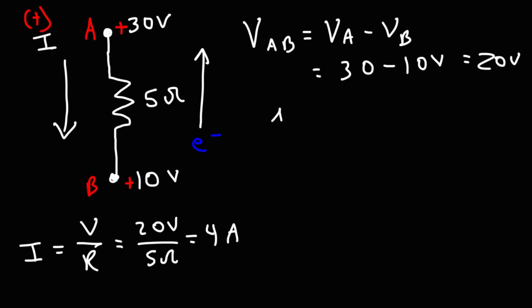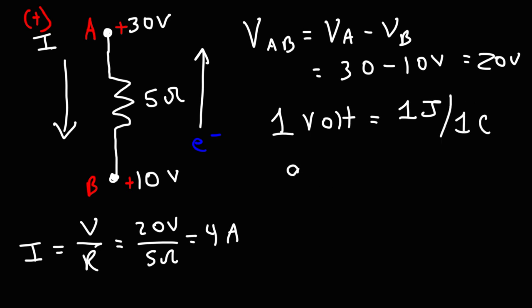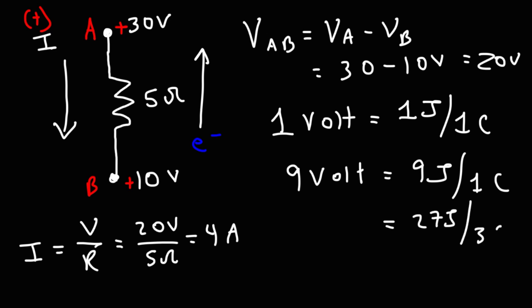One volt tells us how much work can be done per one coulomb of charge — one volt means one joule of work per coulomb. A 9-volt battery can do 9 joules of work per coulomb, or 27 joules per 3 coulombs. Voltage tells you how much work can be done per unit charge. Work is equal to the charge times the voltage.